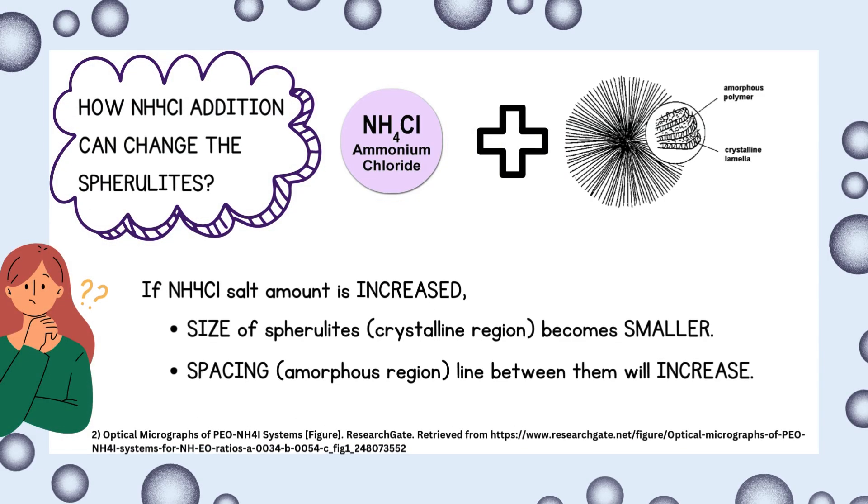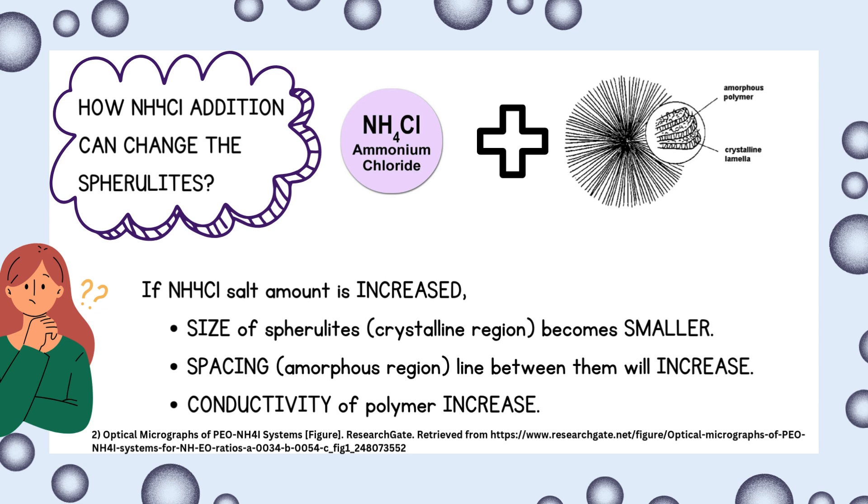Ammonium chloride changes the spherulites in a polymer. By addition of ammonium chloride to the polymer, the size of the spherulites becomes smaller. The space between the spherulites, which is the amorphous region, increases. The conductivity of the polymer increases.